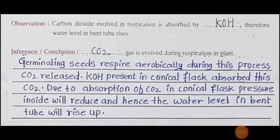In our observation, we write that carbon dioxide evolved in respiration is absorbed by KOH, therefore the water level in the bent tube rises. The inference or conclusion is that carbon dioxide gas is evolved because those germinated seeds — those sprouted seeds — respire aerobically and they release carbon dioxide.